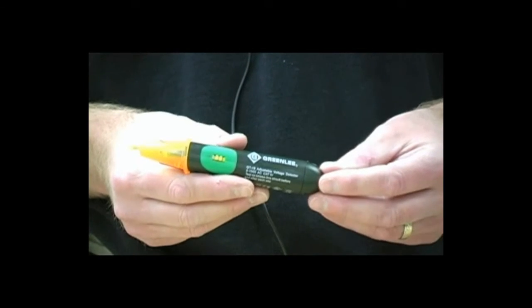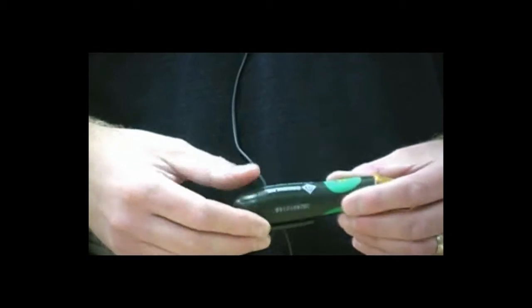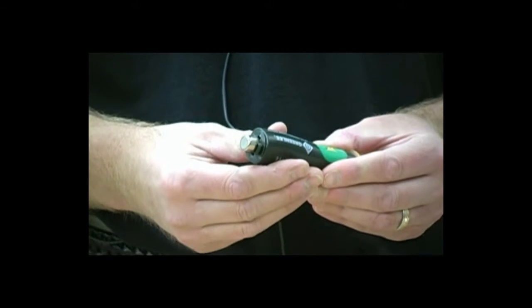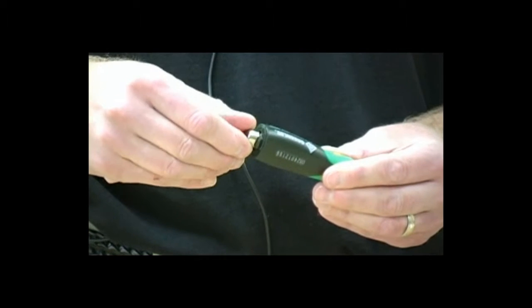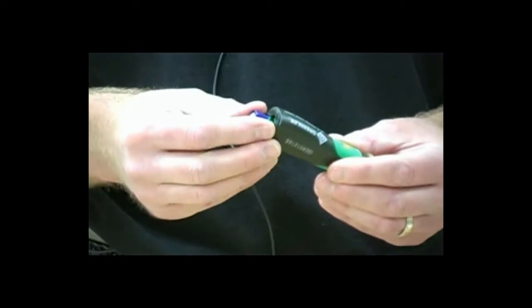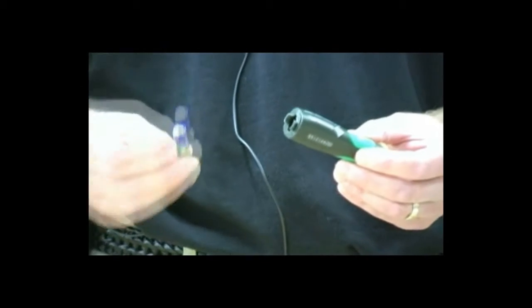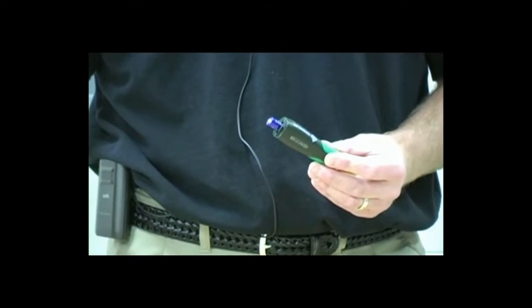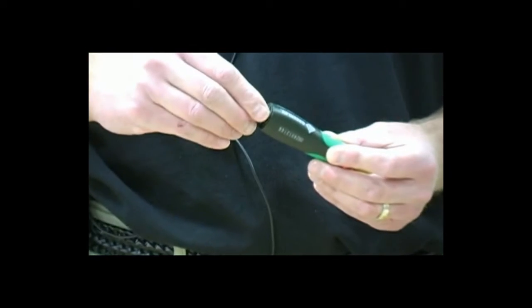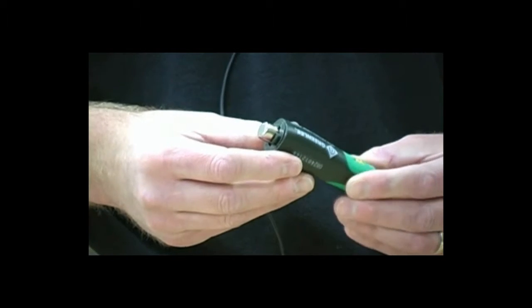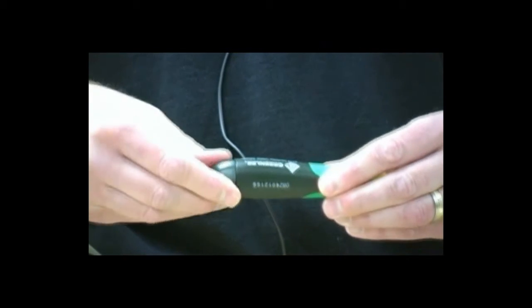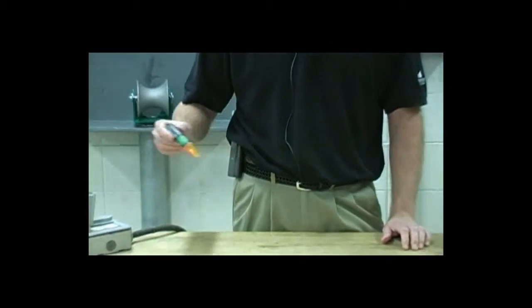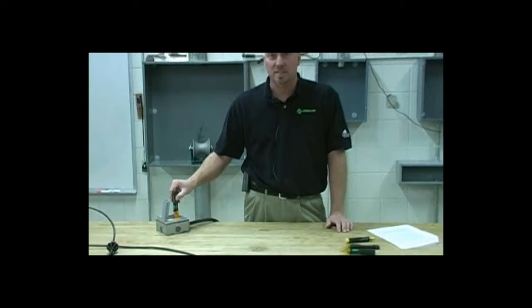To remove the batteries on the GT16, rotate the pocket clip. There is a secondary battery cap. Rotate that 90 degrees to expose the battery. The GT16 uses only one AAA battery. Install the new battery. Reinstall the battery cap with a 90 degree twist. Reinstall the pocket clip. Turn the unit on. Be sure to test it on a known live circuit.